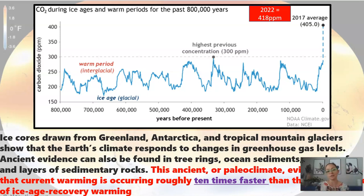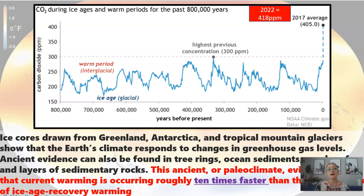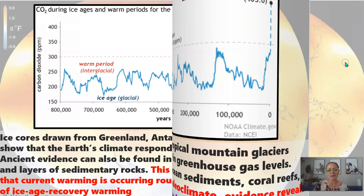We have done it in a hundred years. The rate of change is what's different, and that's what's causing huge disruptions to our ecosystems, because the speed at which changes are occurring makes it incredibly difficult for natural selection to keep up — natural selection relies on variation within populations, and variation is created by random mutations.